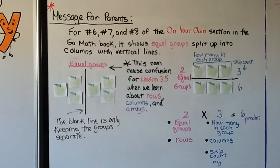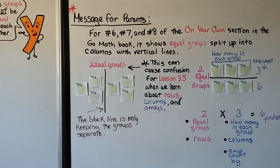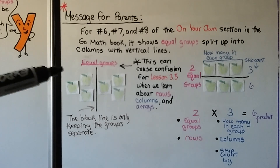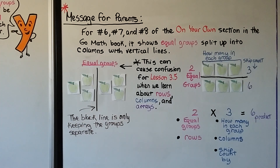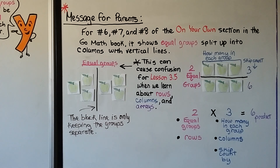Here's a message for parents. For numbers six, seven, and eight of the On Your Own section in the Go Math book, it shows equal groups split up into columns with vertical lines. This can cause confusion when we get to lesson 3.5 when we learn about rows and columns and arrays.